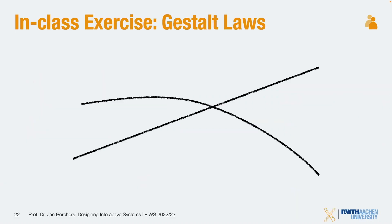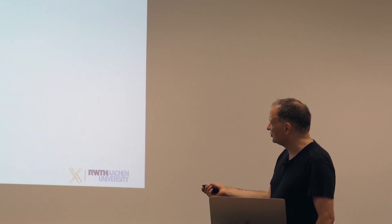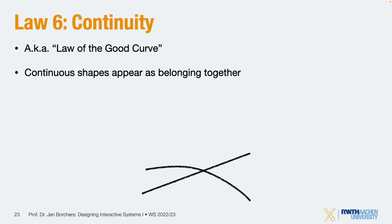The law of continuity, also called the law of the good curve: we perceive continuous shapes as belonging together. If two curves cross, you see them as one continuous S-curve and one continuous line — not as two V-shapes kissing. The continuous form or direction makes it one object. We don't assemble things along the intersection point; continuity overrides that.